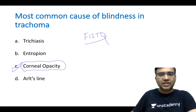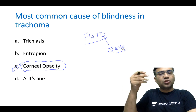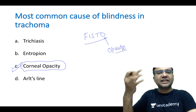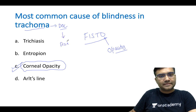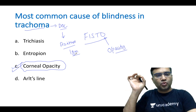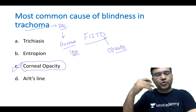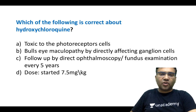In the FISTO classification, O stands for opacity. Another frequently asked question for trachoma is the drug of choice: in young adults it is now single-dose azithromycin, one gram. Single dose, one gram azithromycin is the drug of choice for trachoma.